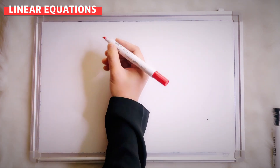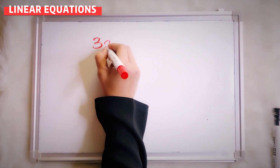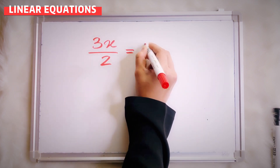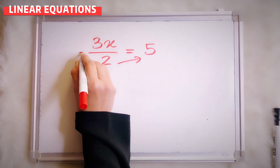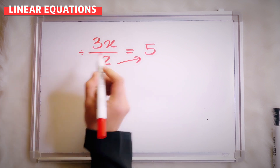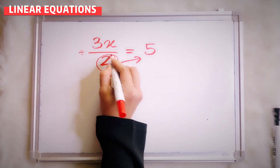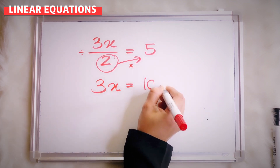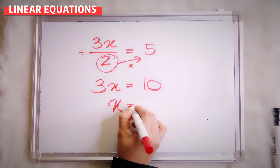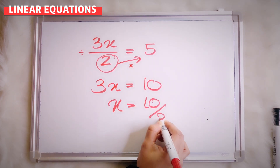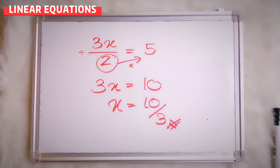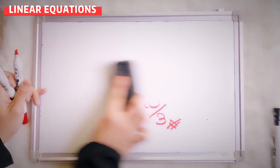One more. I give you 3x over 2 equals to 5. Here is divide, and the opposite of divide is multiply. So 3x equals to 10. Now your x will be 10 over 3.